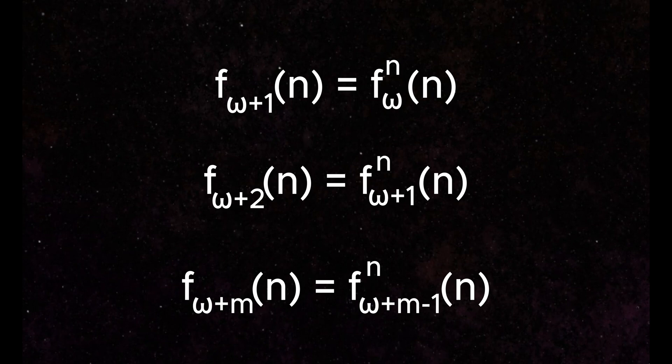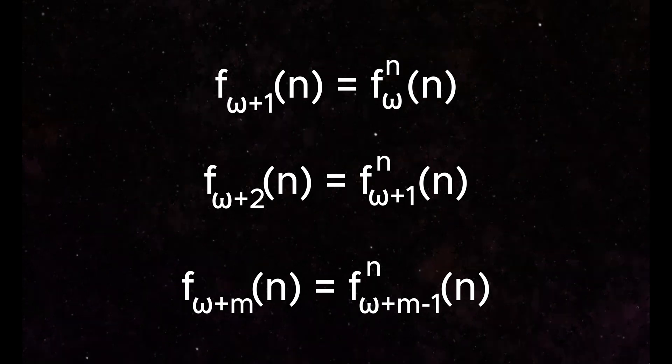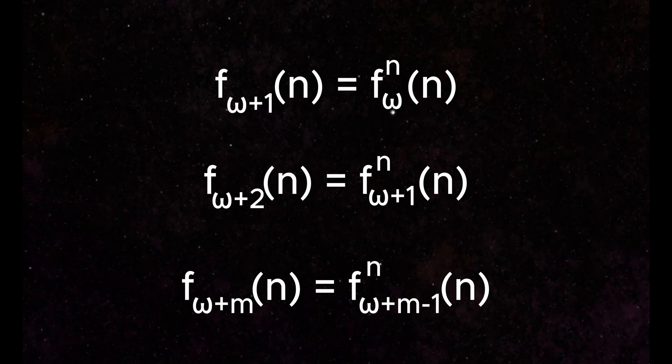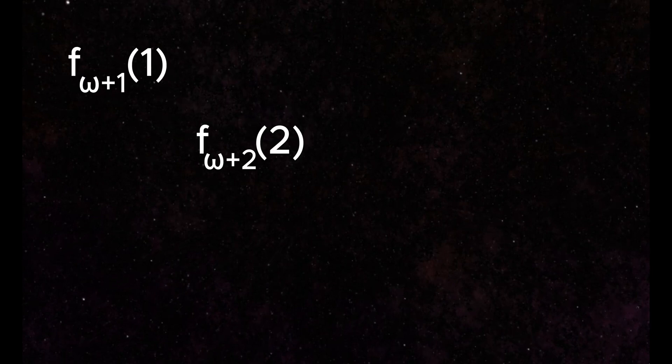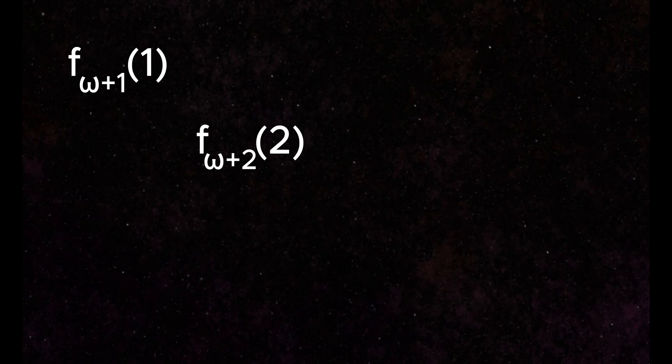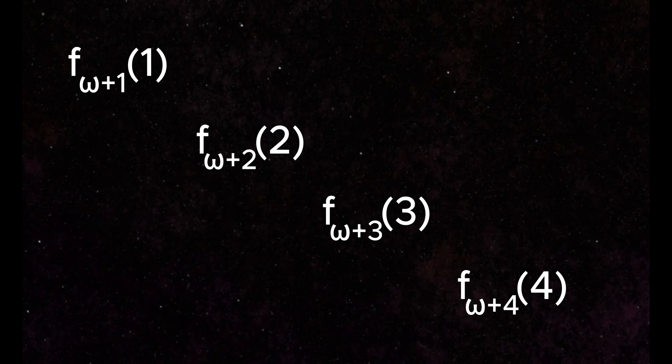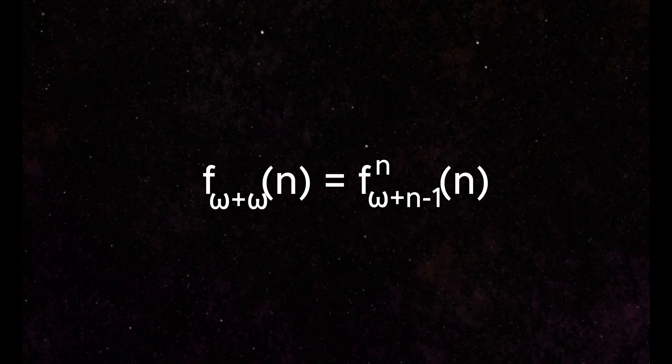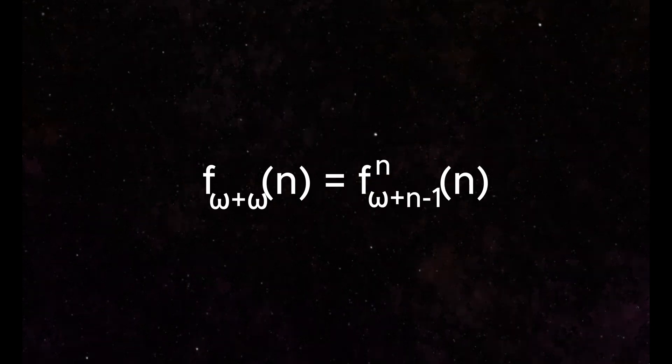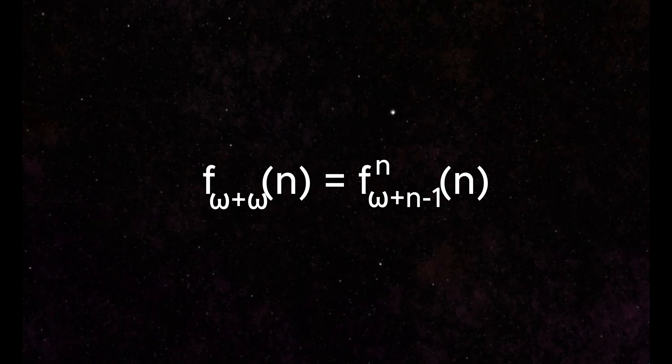What happens when we run out of numbers? Well, we can diagonalize across these sequences to rewrite the function in creating a new number sequence. This effectively adds an omega to this subscript. This is defined here and can be rewritten as f_2omega.